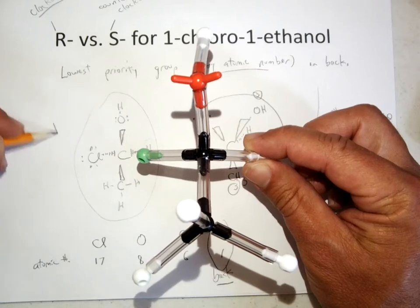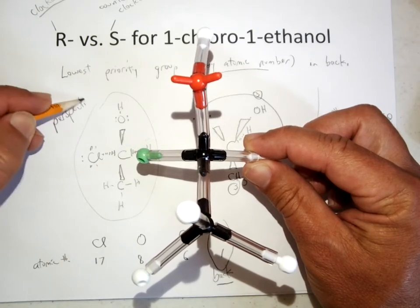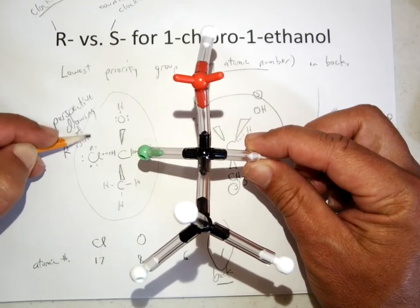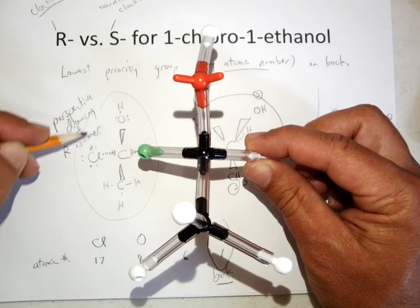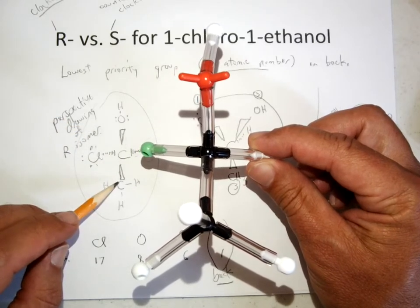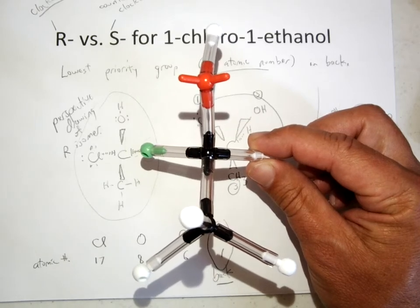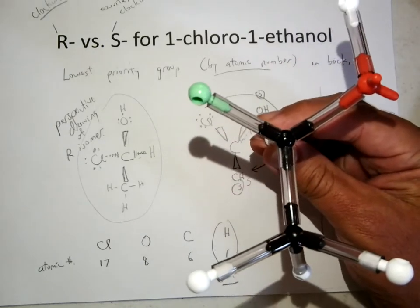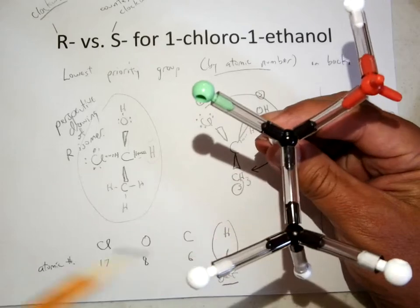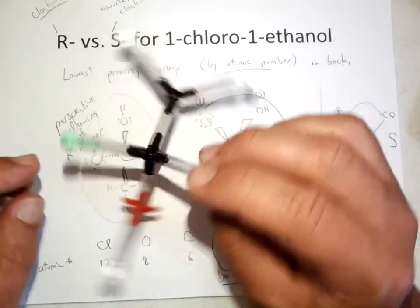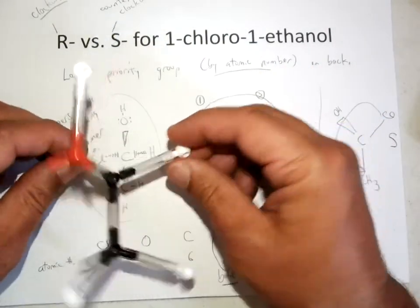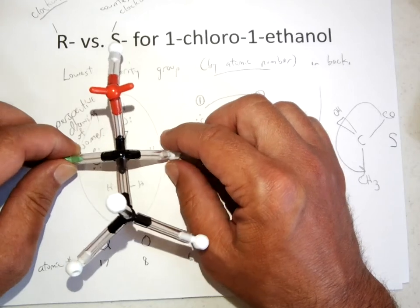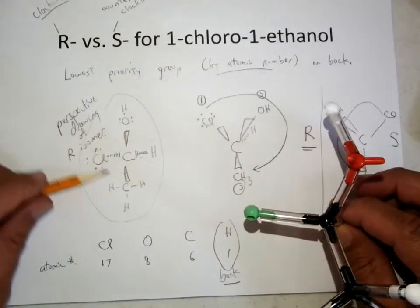So this is a perspective drawing of the R isomer where I used wedges and dashes to show what's towards me, what's away from me, and I used the one we confirmed as the R isomer because of the clockwise rotation to help me to visualize which way the groups would point towards me or away from me so I could see how to draw the wedges and dashes.